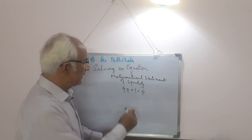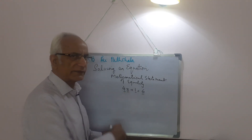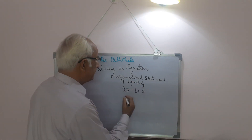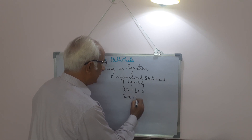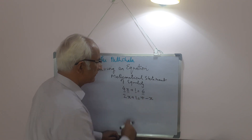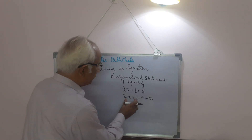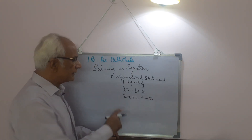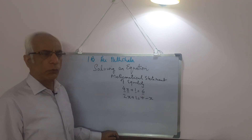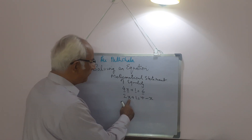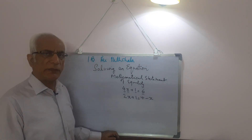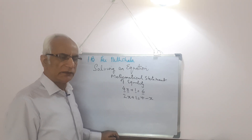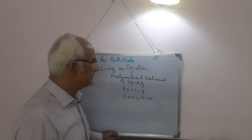In this equation the variable appears only on one side, but there could be situations where the variable appears on both sides — for example, 2x plus 1 is equal to 4 minus x. Here the variable x is on the left side and also on the right side. This is a linear equation in one variable, because the power of x — the degree of the variable — is 1.